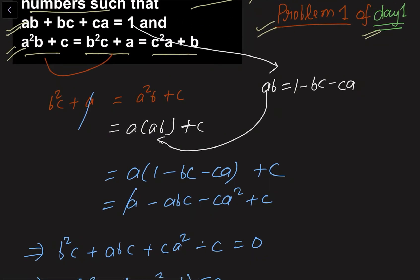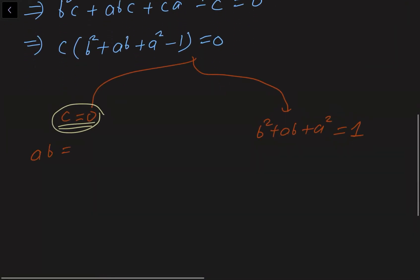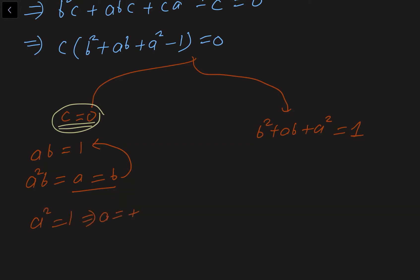From the first equation, with C = 0, we get AB = 1. From the second equation we get A²B = A = B. Since A = B, substituting back into AB = 1 gives A² = 1, so A = ±1, and B = ±1 as well.